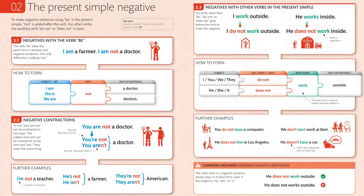It's very straightforward: 'I work outside' → 'I do not work outside.' 'He works inside' → 'He doesn't work inside.' I give strong emphasis to the way we say it, because this is also a pronunciation lesson. A lot of people say 'he does not' in a way that doesn't sound close to how native speakers say it.